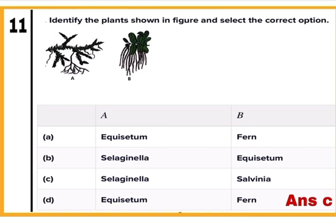Question 11: Identify plants A and B. A is Selaginella and B is Salvinia. Both are pteridophytes and produce two types of spores, hence both are known as heterosporous. Mark C as the correct answer.